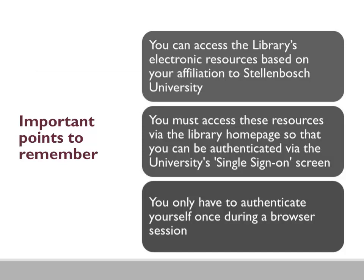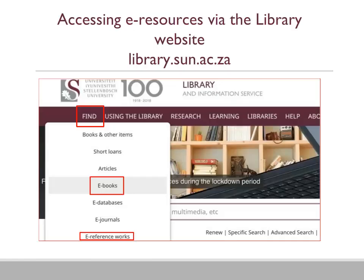Remember these important points. You can access the library's electronic resources based on your affiliation to Stellenbosch University. You must access these resources via the library homepage so that you can be authenticated via the university's single sign-on screen. You only have to authenticate yourself once during a browser session. By using the Find menu on the library homepage you can get access to a world of electronic resources, for example ebooks and e-reference works.